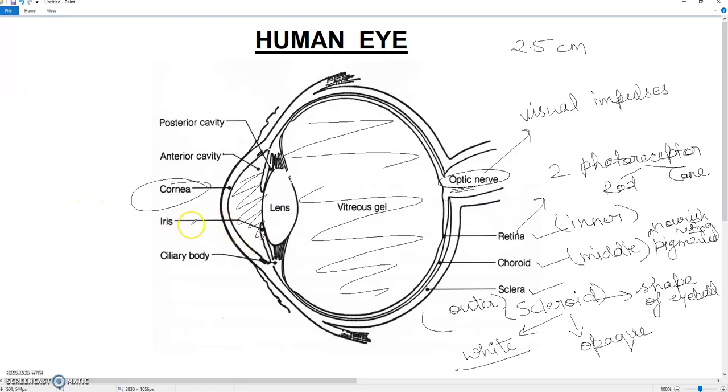Next, we will talk about iris. The iris controls the size of the pupil. Students, the iris will control the size of the pupil and it will control the amount of light entering. So you can say this is a pigmented circle.